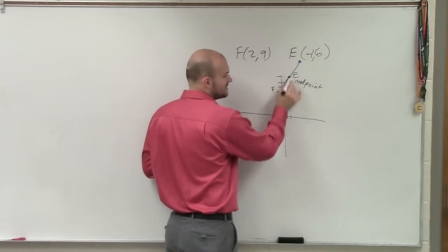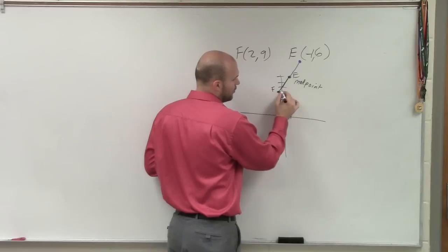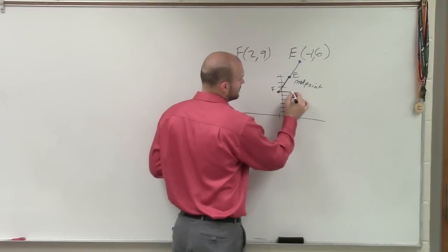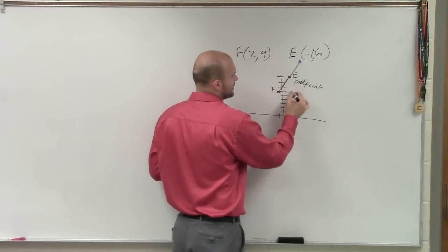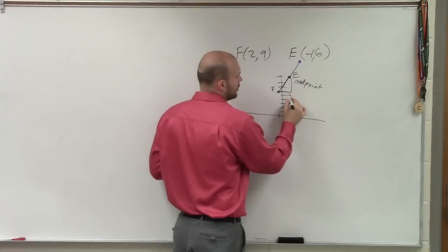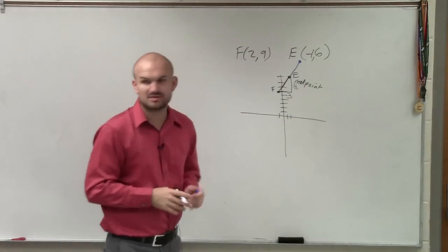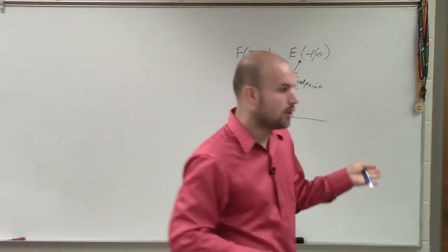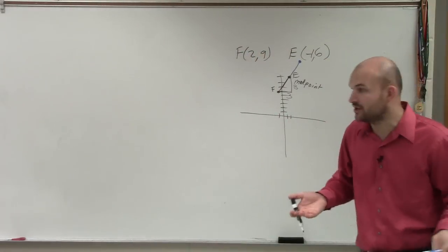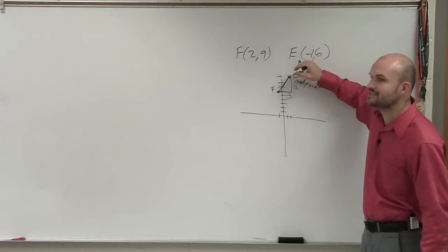If you kind of go over to go from this point to this point, you see you're going over 1, 2, 3, and then you're going up 1, 2, 3. So you're going over 3, up 3, kind of remember slope, right? So if you go over 3, up 3, and that takes you to the middle, what do you think you're going to have to do now to get to the next point?